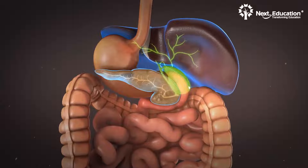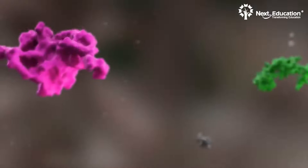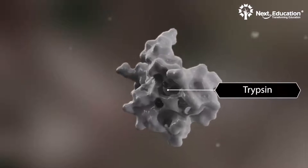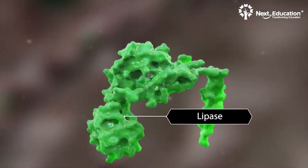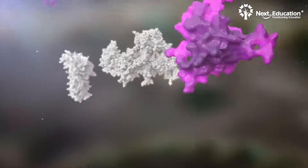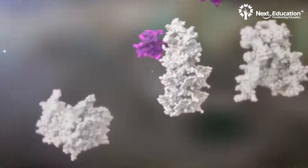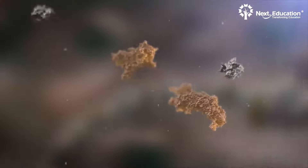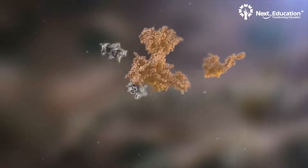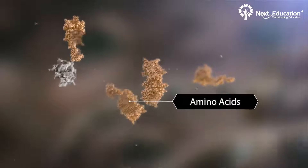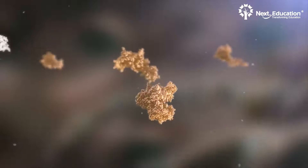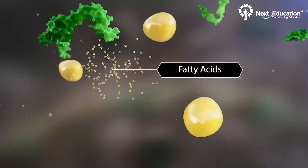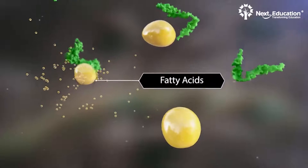Pancreatic juices contain enzymes such as disaccharidases, trypsin, and lipase. Disaccharidases help in the further breakdown of disaccharides into glucose. Trypsin breaks down peptones and proteoses into amino acids, and lipase breaks down smaller globules of fats into fatty acids and glycerol.